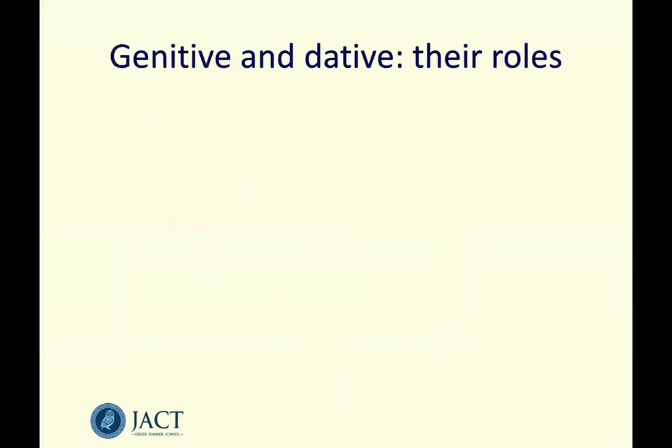Now we're going to meet the genitive and the dative — the third and fourth of the four major cases in Greek. The vocative is a fifth one, but it's not nearly as important because it's often the same in form as the nominative, and vocatives — when you're talking to somebody — are not so frequent as the other four cases. So there are four main cases in Greek, and the genitive and the dative are the third and the fourth. Let's talk about their roles briefly.